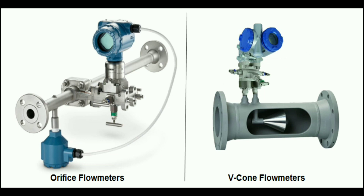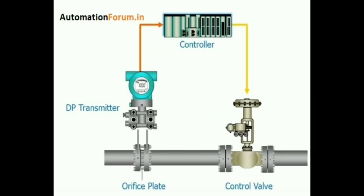Across the obstruction, resulting in a higher differential pressure measured by the transmitter. The DP flow transmitter consists of a sensing element such as a diaphragm or strain gauge that measures the pressure difference between the two pressure taps connected to the pipeline, which may be an orifice plate or a venturi tube. The transmitter converts the differential pressure signal into a standardized output signal like 4 to 20 milliamps or 1 to 5 volts, which is proportional to the flow rate and can be transmitted to a control system such as a PLC, DCS, or PID controller.